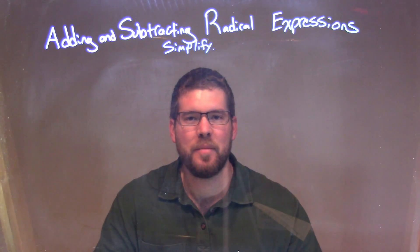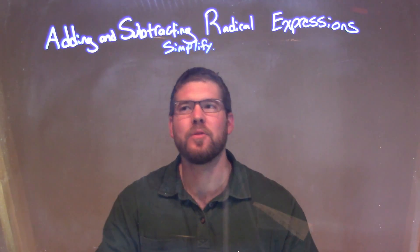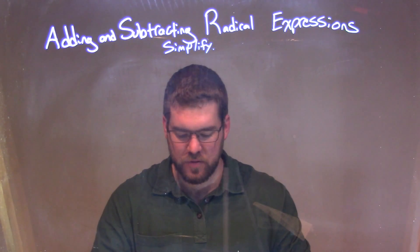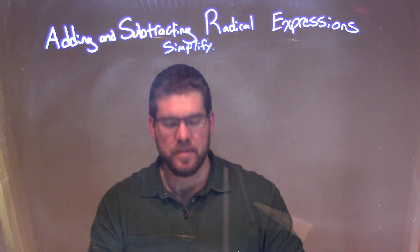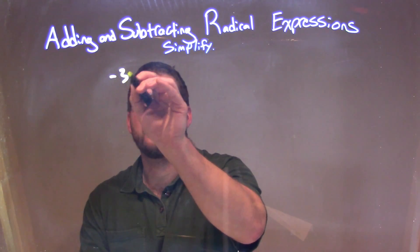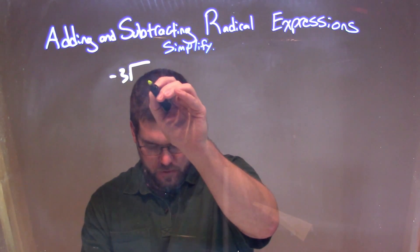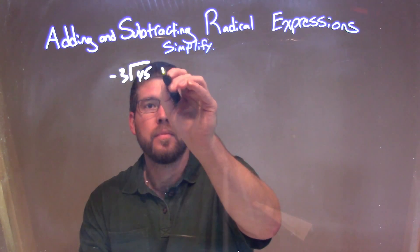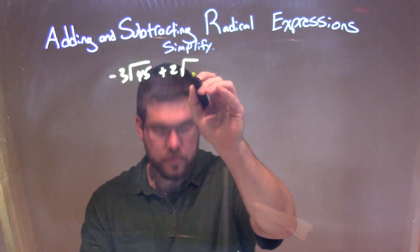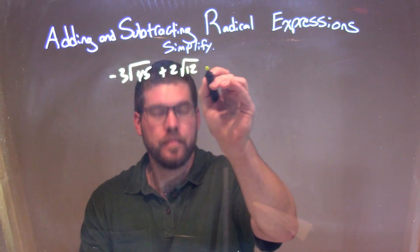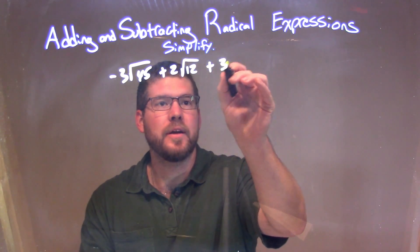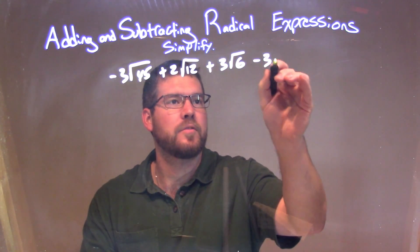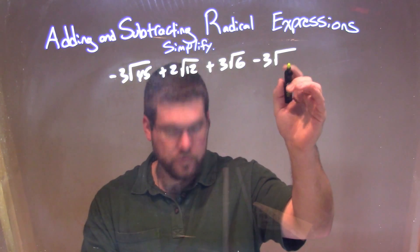Hi, I'm Sean Gannon, and this is MinuteMath, and today we're going to learn about adding and subtracting radical expressions. So if I was given this expression: negative 3 times the square root of 45, plus 2 times the square root of 12, plus 3 square root of 6, minus 3 square root of 20.